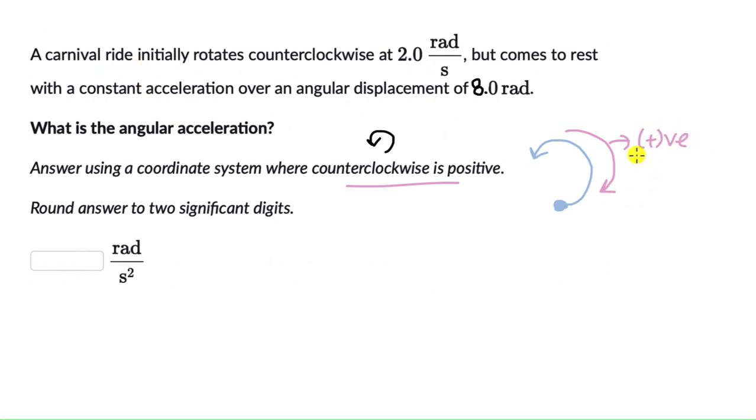So this is positive. Acceleration will be positive. And we know the angular displacement is 8 radians. Alright, so let's try to list down all the variables that we know.